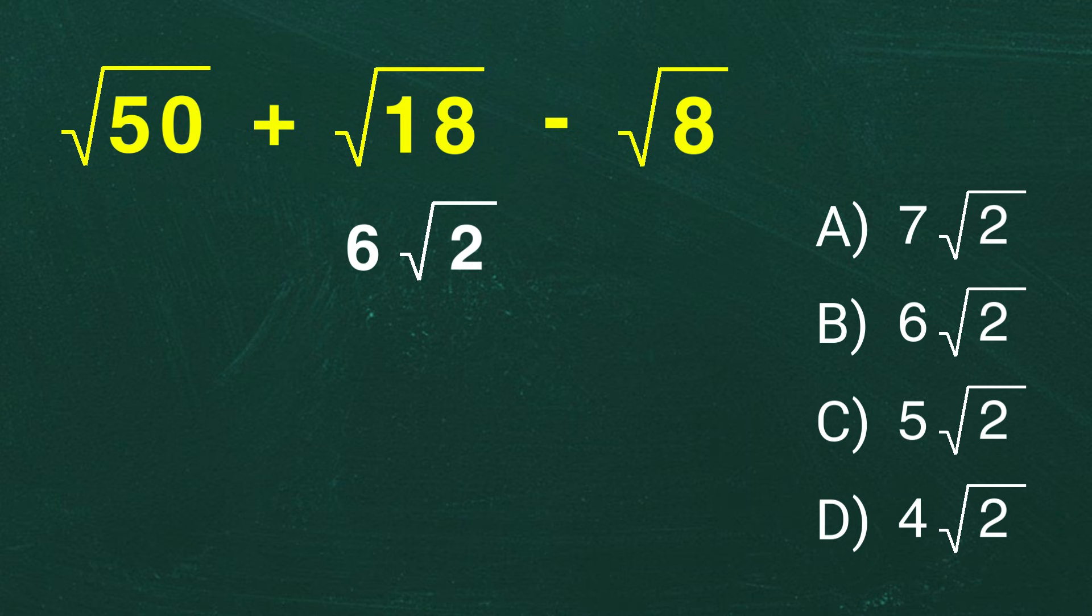And there you have it. The correct answer is B: 6 root 2. Wasn't that easy? Now, you can simplify square roots like a pro.